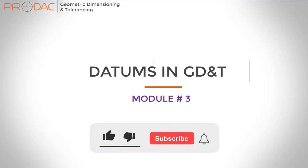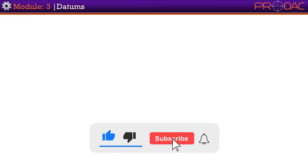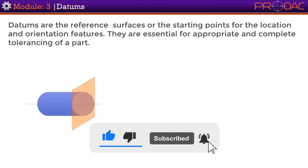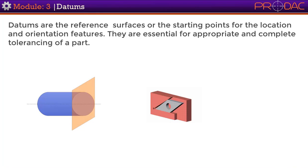Module 3: Datums in GD&T. Next in this series, we'll discuss datums, which are the reference surfaces or the starting points for the location and orientation features. They are essential for appropriate and complete tolerancing of a part.